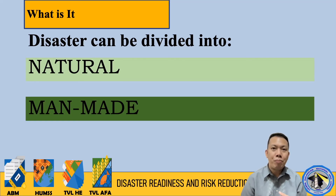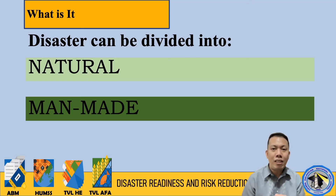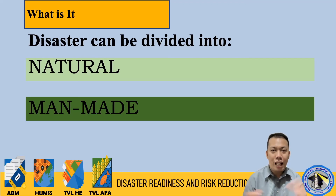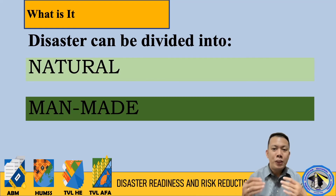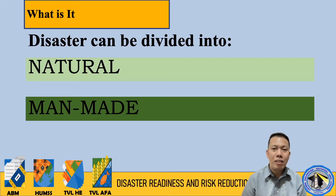You might ask: is fire man-made or natural? It could be natural if caused by natural forces — for example, during El Niño or high temperatures, a spark from dried leaves can cause grass fire and eventually forest fire, like what happened in Australia. If it is man-made, for example, someone intentionally sets a house on fire, that is man-made. So fire could be man-made or natural, but most of the time it is natural, and only a few fire disasters are actually man-made.